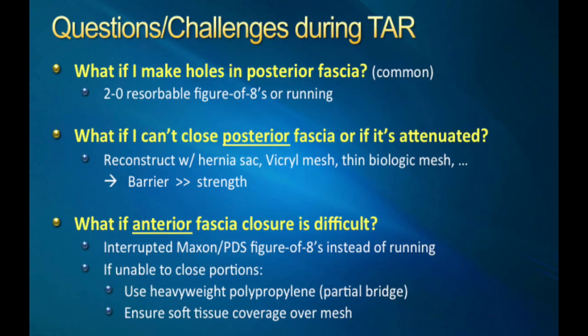Some common questions that come up during TAR: the most simple one is what if you make some holes in the posterior fascia. This is quite common and usually not a big deal. Typically simple little rents are closed with 2-0 resorbable sutures. If it's a larger rent, I'll maybe run part of it, but typically just some interrupted sutures.